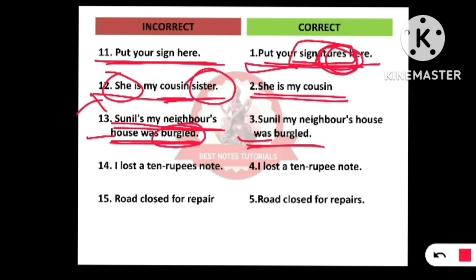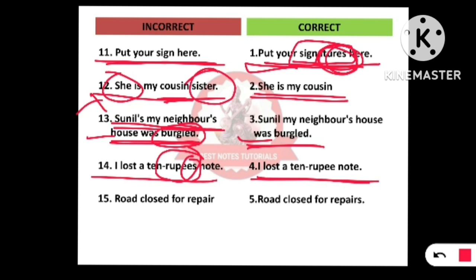Number fourteen: 'I lost a 10 rupees note.' We should not use 's' here. It is not a collection of one-one rupees — it is one particular ten-rupee note. Therefore the correct form is: 'I lost a 10 rupee note.' No 's' is required.